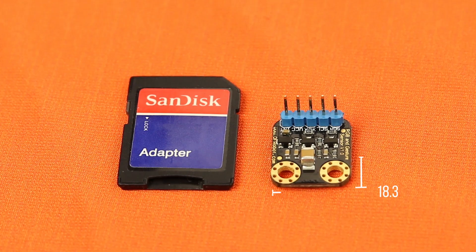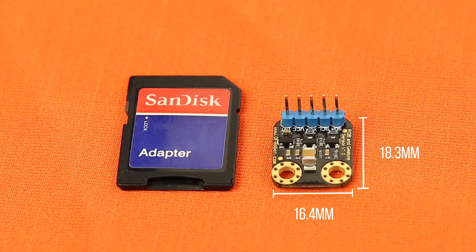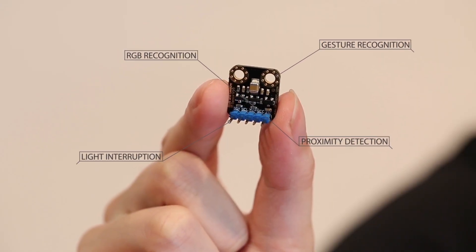Sensing modules are integrated onto an SD card size PCB board, which would be small enough to fit into most wearable devices.